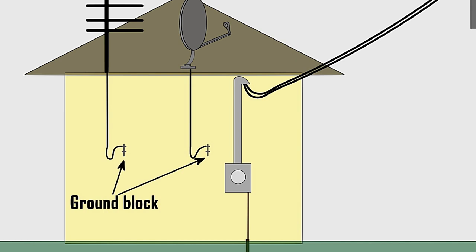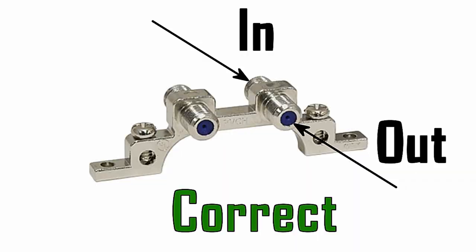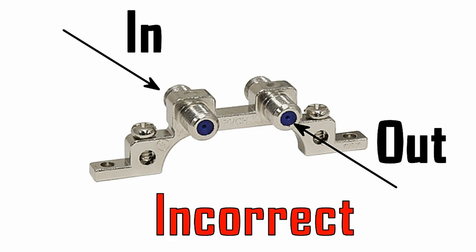Starting up top, we're going to run our coaxial cord down from our satellite dish or TV antenna into a ground block. Now a ground block is not a splitter, it is simply a pass-through. So the port you go into is the same port you have to come out of. You cannot mix and match with a ground block.